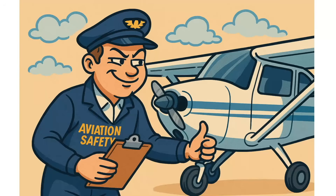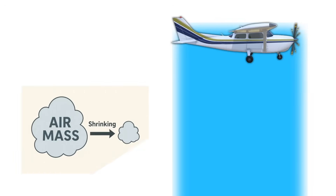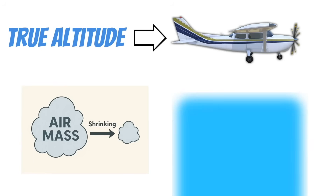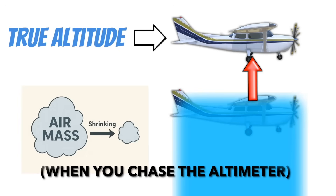Now that you understand how this works, the FAA is going to try to trick you on the test. Instead of asking you what your true altitude is, they may ask you what your indicated altitude is going to be. For example: how would your aircraft's indicated altitude change if you flew into an area of cooler weather if you continued to fly straight and level? You just need to think for a minute — the air cooled down so the air mass shrank, which would have brought the aircraft down lower if you had chased the altimeter. But you didn't — you continued to fly straight and level, so your true altitude stayed the same, and your indicated altitude actually went up. Remember: from high to low, look out below, because you're lower than you think you are.